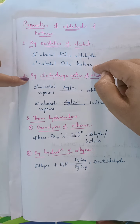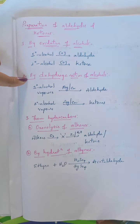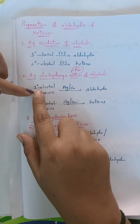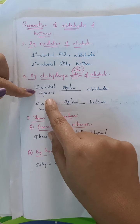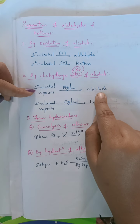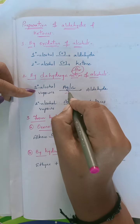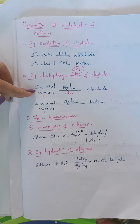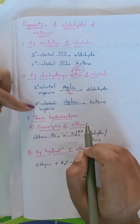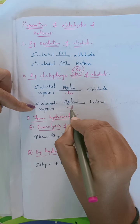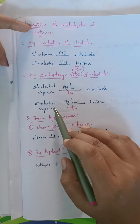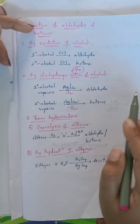The second method is by dehydrogenation of alcohols — dehydrogenation means removal of hydrogen. When primary alcohol vapors are passed through silver or copper metal, they lose hydrogen and convert into aldehyde. Similarly, vapors of secondary alcohols passed through silver or copper give ketones. So dehydrogenation of primary and secondary alcohols gives aldehydes and ketones respectively.